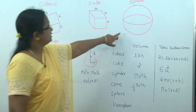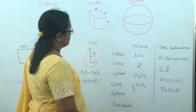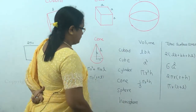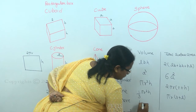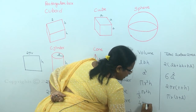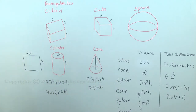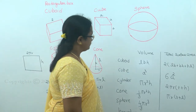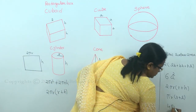The sphere is a 3D shape like a ball. The volume of a sphere is (4/3)πR³ and the total surface area is 4πR².